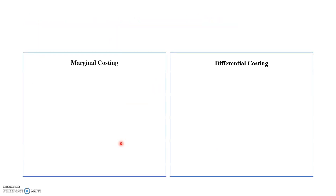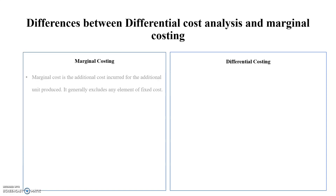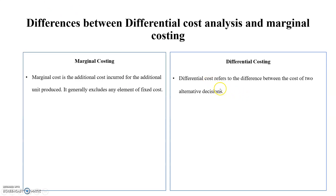We now move to the differences between marginal costing and differential costing. Marginal costing is the additional cost incurred for the additional unit produced, and it generally excludes any element of fixed cost — it is the total variable cost. Differential costing refers to the difference in cost between two alternative decisions, arising due to changes in course of action or method of production.